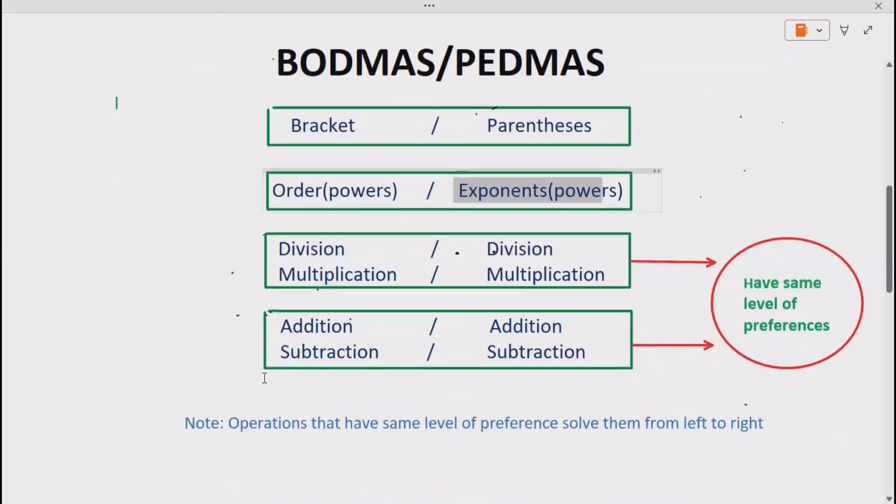Always remember, division and multiplication, also addition and subtraction, have the same level of preference. What does it mean? It means whenever division and multiplication both are present in your expression at the same time, solve that operation first that comes first going from left to right.